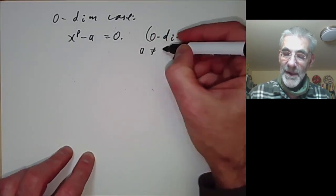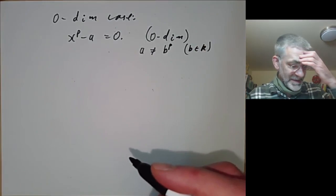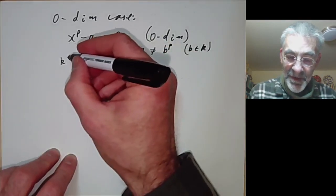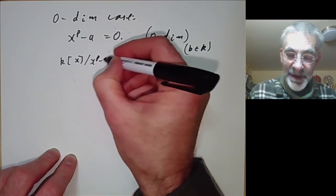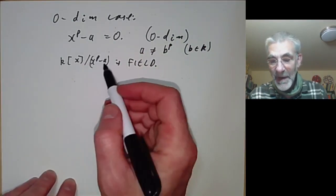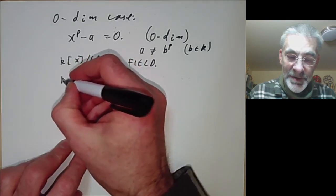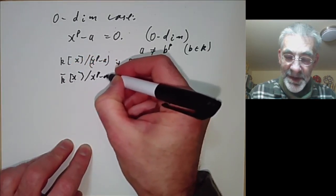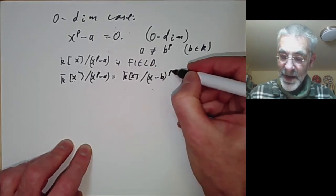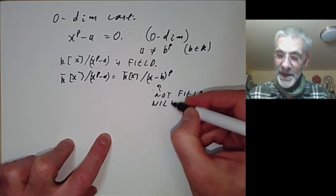Of course a is not a p-th power in k. The ring k[x]/(x^p − a) is just a field, so it has only one maximal ideal which is zero, and the local ring at that point is this field — it's certainly regular with no problem at all. But over the algebraic closure, k-bar[x]/(x^p − a) splits as k-bar[x]/(x − b)^p where b^p = a, and this is not a field — it has nilpotent elements as before.